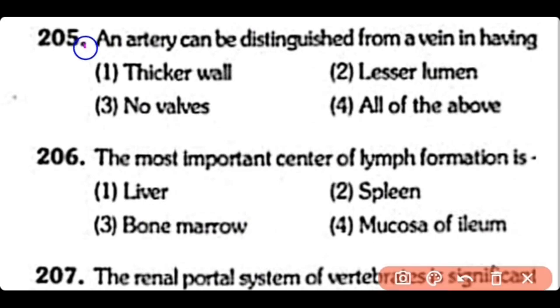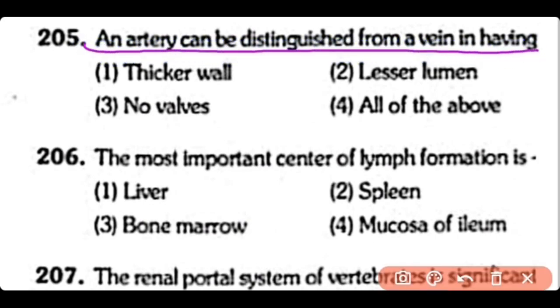Q205. An artery can be distinguished from a vein in having a thicker wall, lesser lumen, or no valves — all of the above. So the correct answer is Option 4.